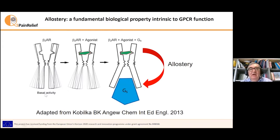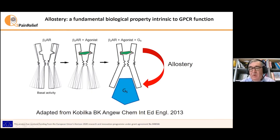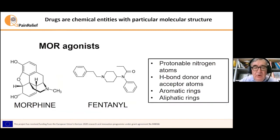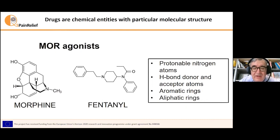You can see here in this picture on the right the allostery that comes from the binding of an agonist in the extracellular part of the receptor, and this binding transmits a signal to the intracellular part of the receptor, and then the G-protein can bind. So there is an allosteric mechanism, which is an intrinsic property of this receptor. Then we will see another allosteric property. Our project is aimed to find a combination of two drugs with the objective of increasing the therapeutic effects and decreasing the unwanted side effects of individual drugs. We chose morphine as the reference drug, and our objective is to find a second drug to improve the pharmacological profile of morphine.